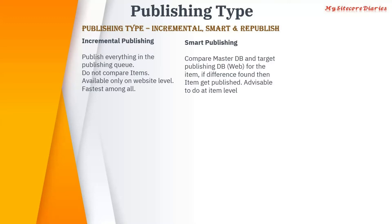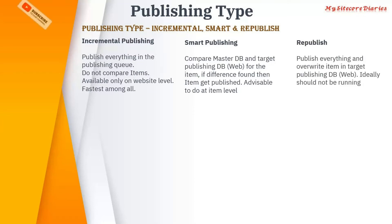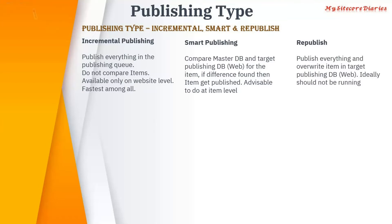It is advisable to do smart publish at the item level because it is comparing items. Republish is nothing but publish everything — it will publish everything and overwrite an item.